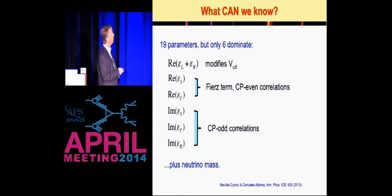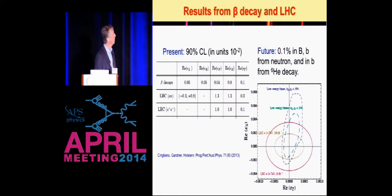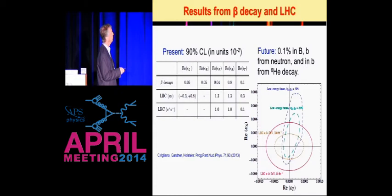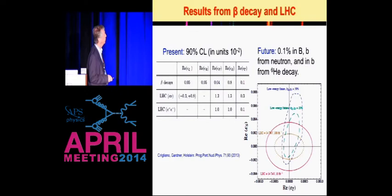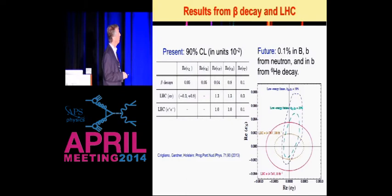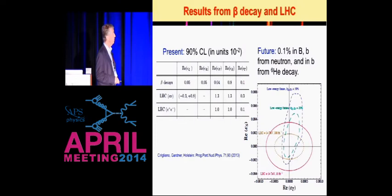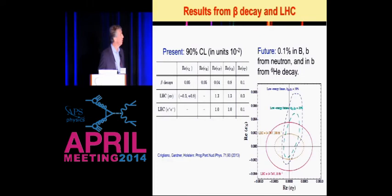These things would give you non-unitarity in the CKM matrix if they were there. This summarizes the state of the art in measuring those various parameters that are most readily accessible. You can do this at the LHC, and you can do it in beta decay. Generally speaking, beta decay still remains the most sensitive way to do this, although there are clearly advances available at the LHC. At 14 TeV, the LHC is going to be very competitive with beta decay, but still there would be a wide range of parameters that you could explore in beta decay that would be equally sensitive, if not more.